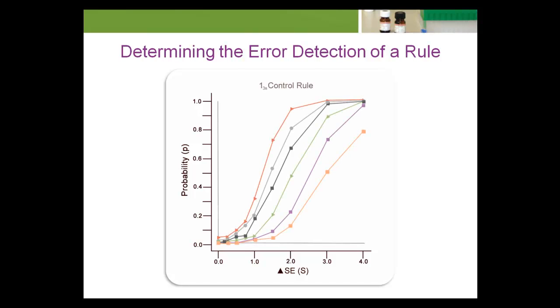The error detection characteristics of a QC rule can be plotted in what's called a power curve. The vertical axis is the probability of error detection. The horizontal axis is the size of the error. In general, as the size of the error grows, the probability of it being detected also grows. In this plot, we're examining the power curve of the 1-3-S rule when evaluated multiple times. The bottom curve is for a single evaluation. The top curve is for 20 evaluations. Notice that if the S-critical is above 4, the 1-3-S rule would likely be suitable.